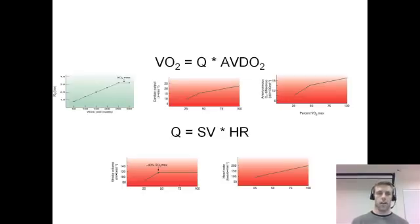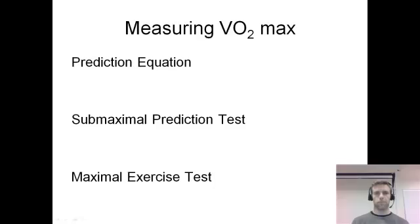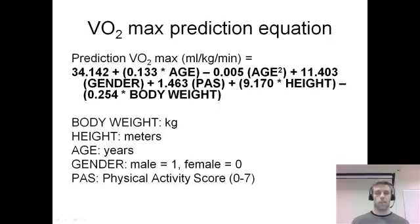All these components combine, and today we'll mostly be looking at VO2 versus work rate, expecting a linear relationship up to VO2 max. There are three ways to measure VO2 max: a prediction equation, a submax test, and a maximum exercise test. The prediction equation doesn't require exercise — you take subject values and plug them in. This approach is cost-effective and time-efficient for large populations or correlation studies.